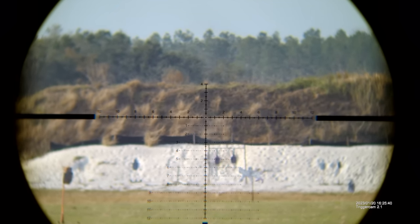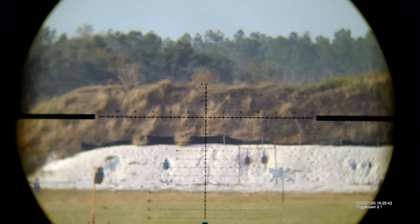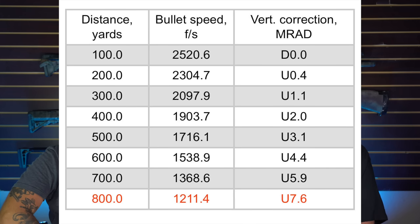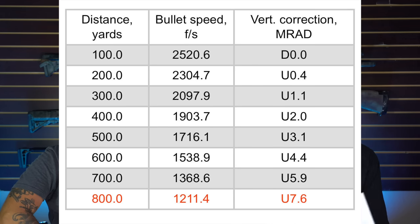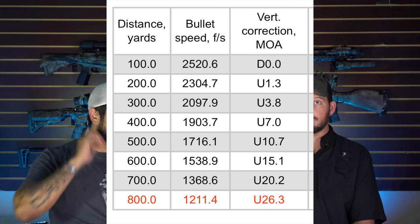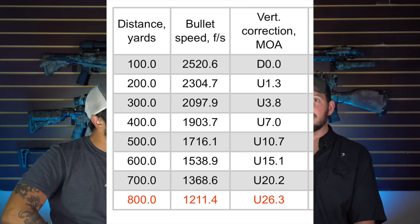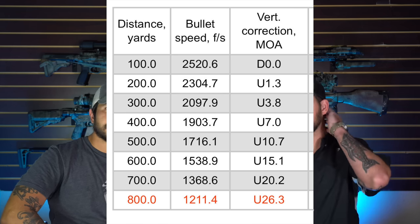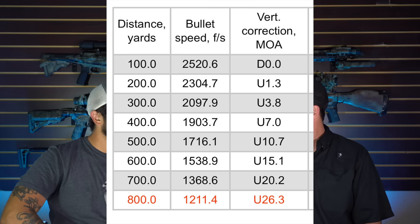That 300-yard hold is about 1.1 mils. That tenth of a mil isn't going to make a big difference on the target sizes we're generally engaging. But if that tenth of a mil needed to be dialed, with an MRAD reticle I can actually dial 1.1. In MOA, that same 300-yard hold would be 3.8 MOA. I can't dial 0.8 MOA — with quarter-MOA adjustments I'd have to round to 3.5 or 4 and split the difference.